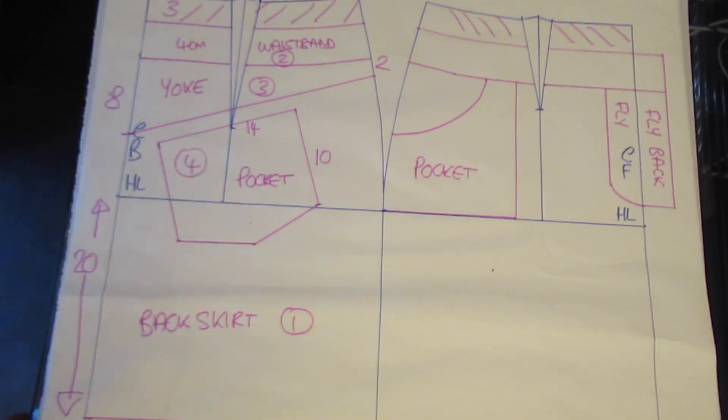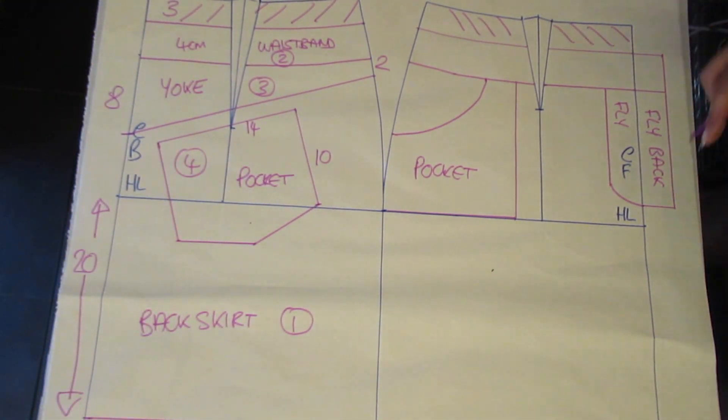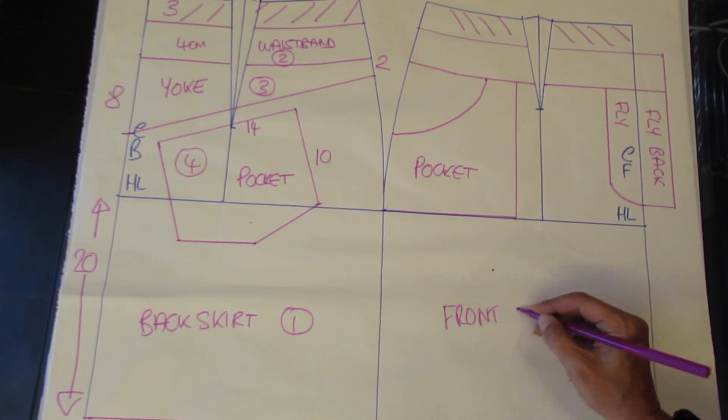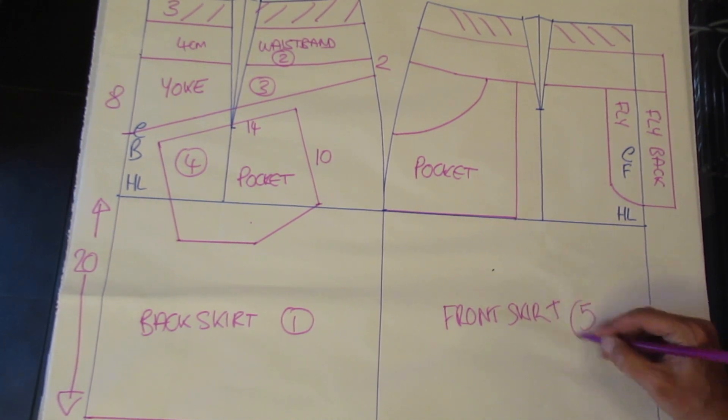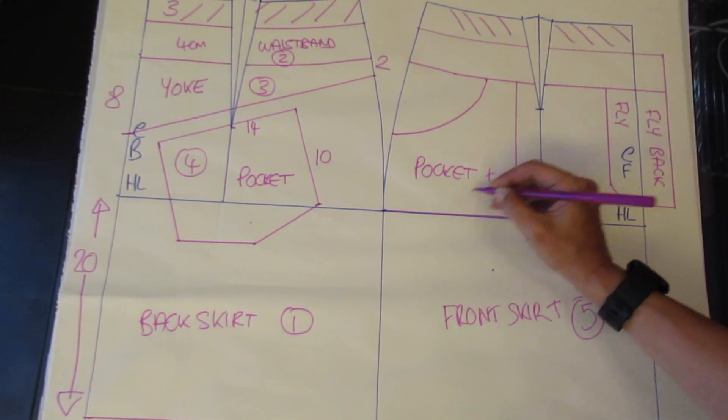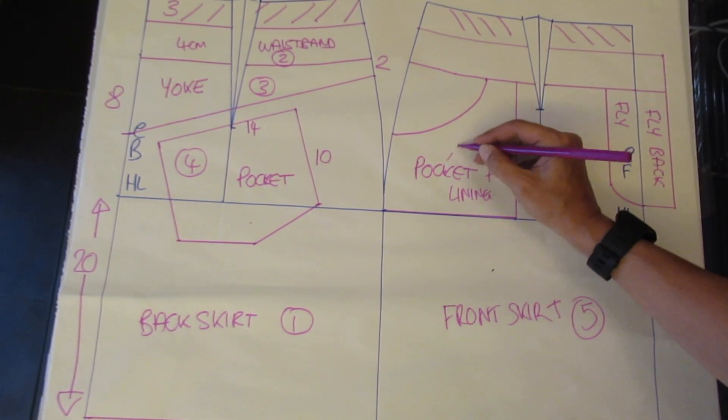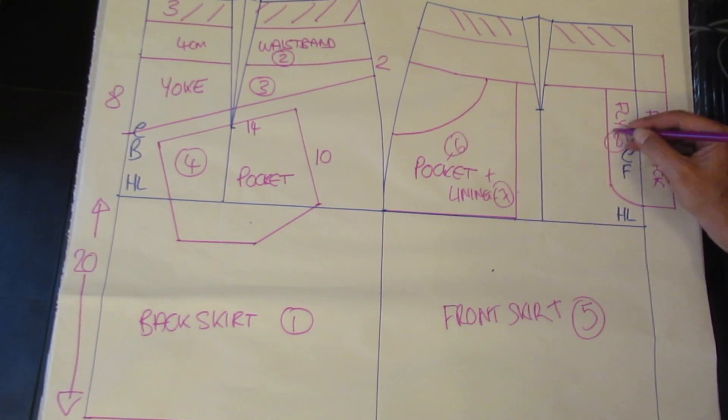Number your pattern pieces or number on the plan to make your pattern pieces. So the back skirt, pocket, yoke, waistband, front pocket, fly, waistband. And don't forget the pocket lining.